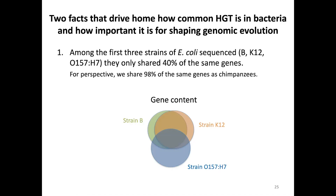As a point of reference, we share 98% of the same genes as chimpanzees, our closest relative. E. coli strains are only sharing 40% — and if you sequence more strains, the core genome shared among all E. coli is probably even lower than that. That's pretty interesting.